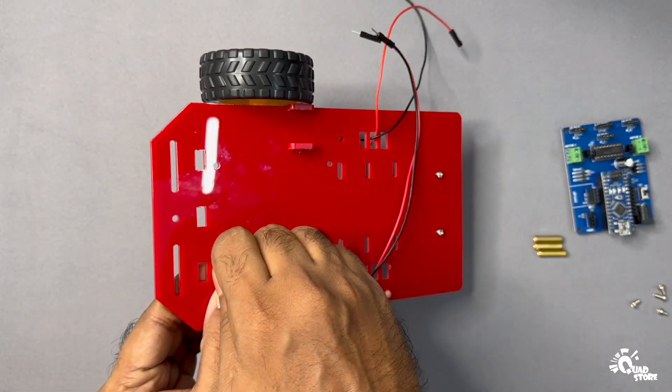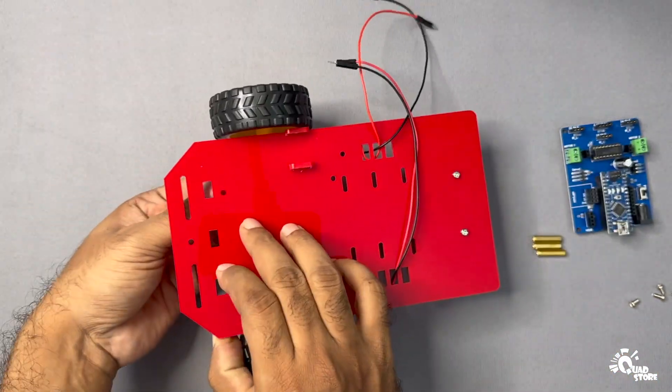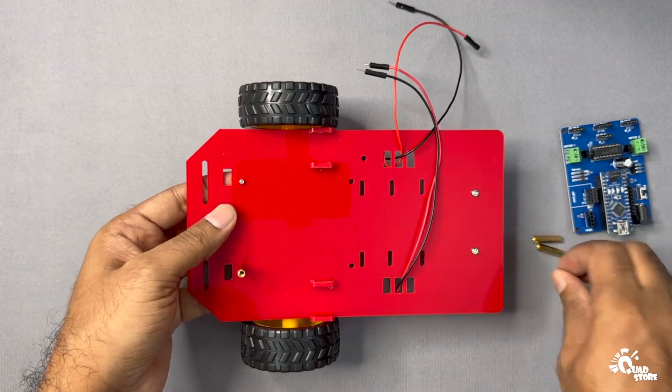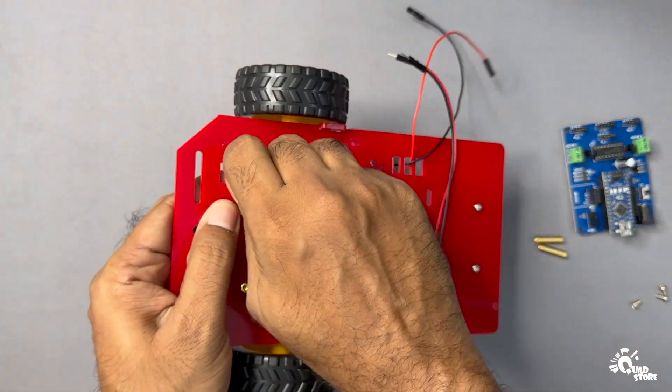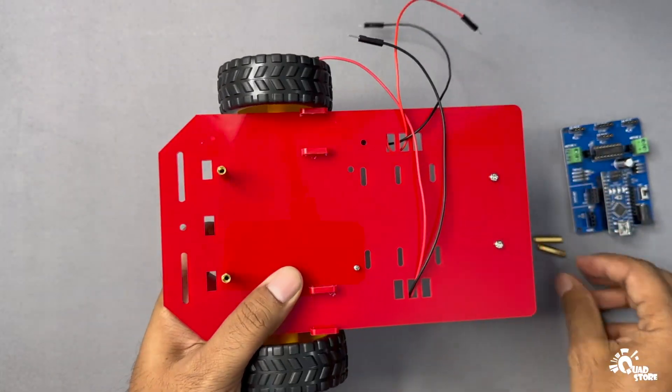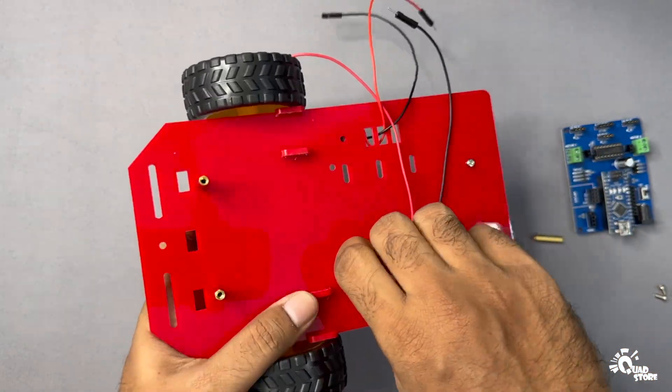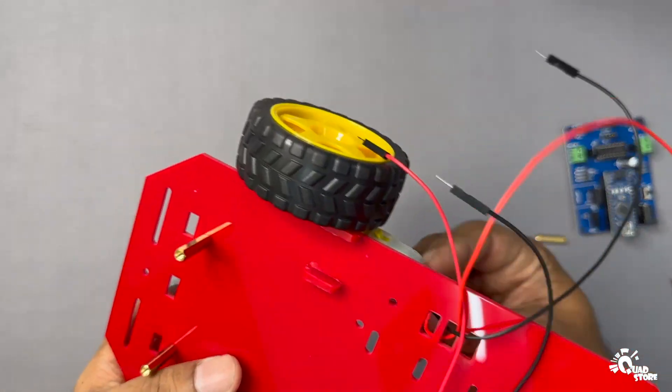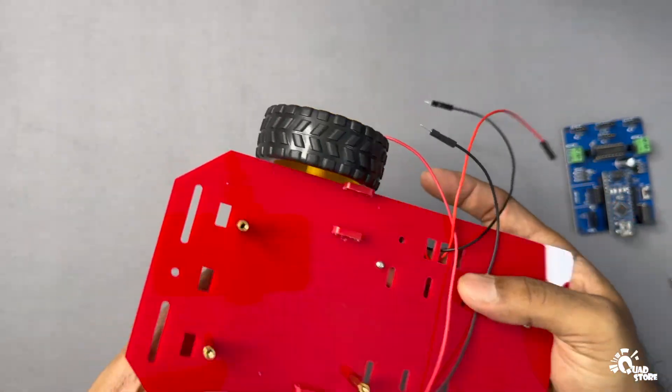Start by inserting screws into the holes as shown in the video and secure each one with a hex mount on the top. Repeat this for all four mounting holes. Once the hex mounts are in place, position the microcontroller PCB on top of them and fasten it using screws.